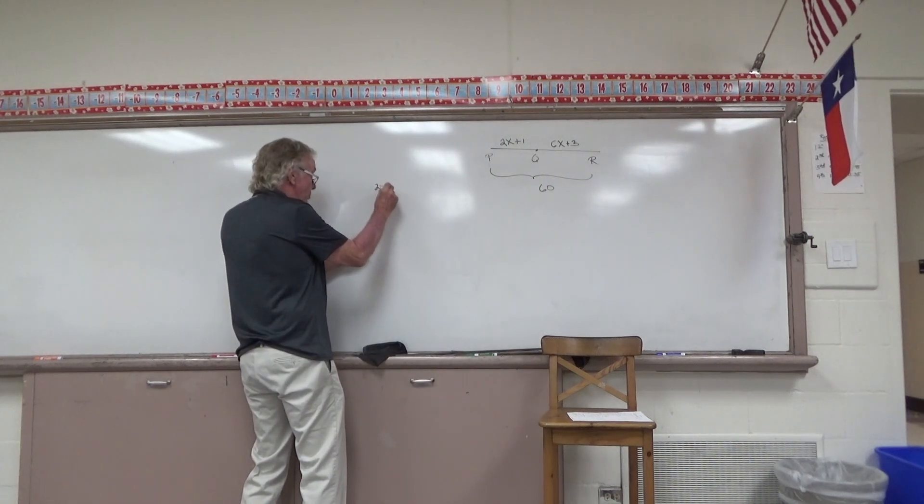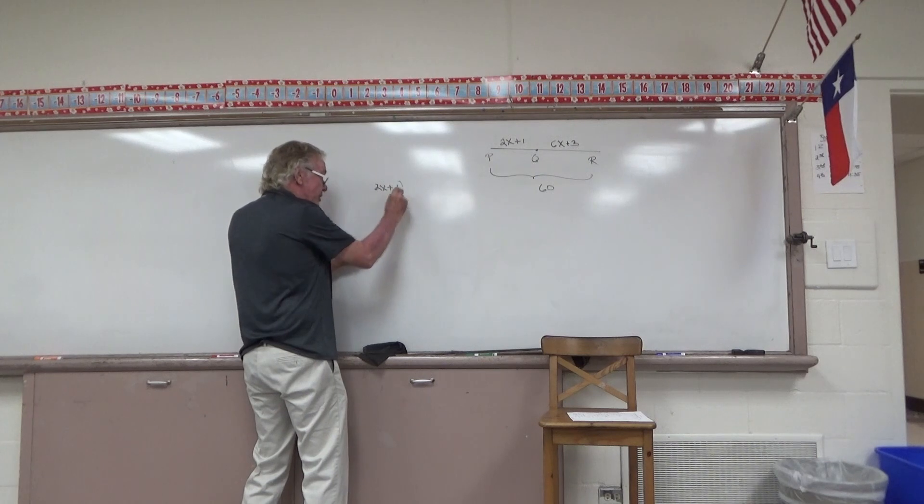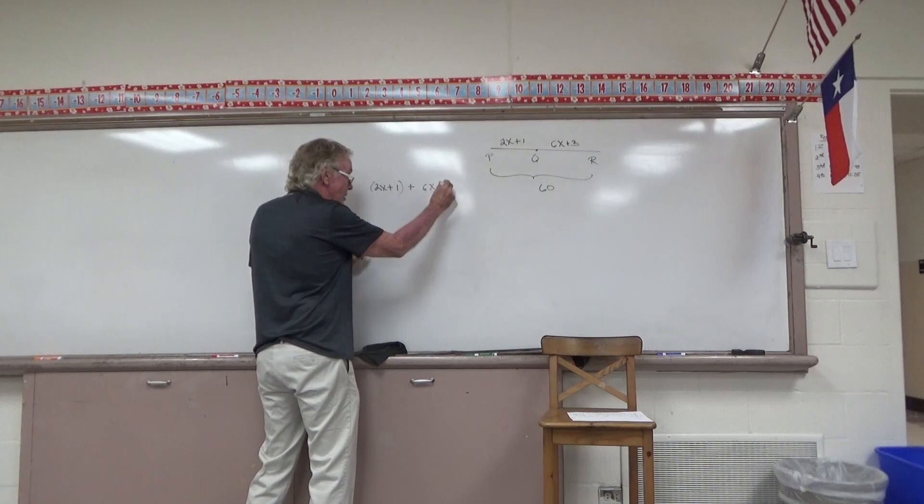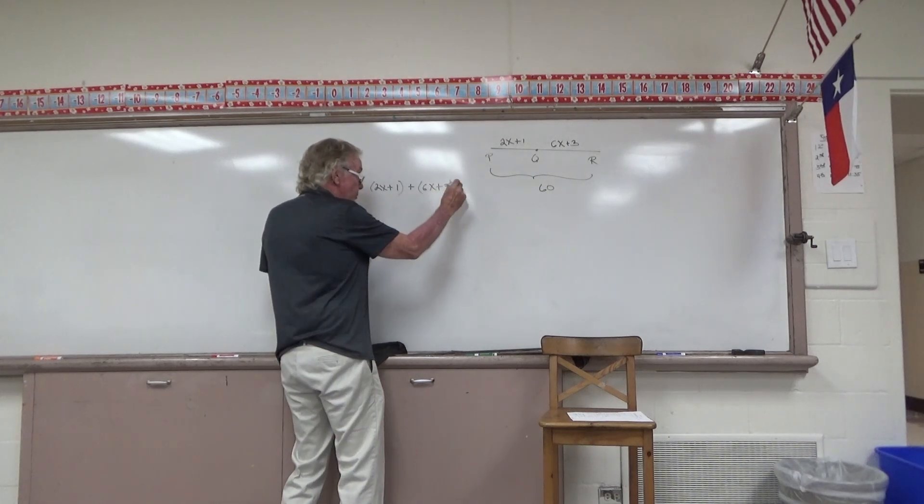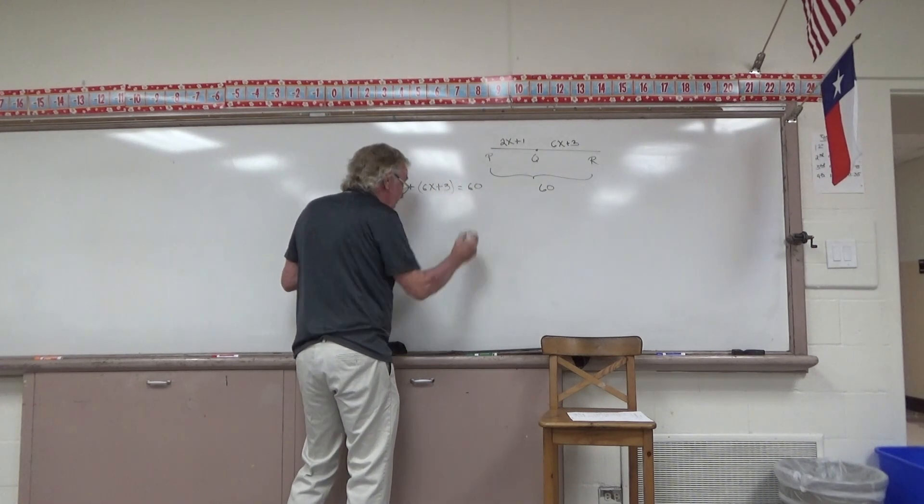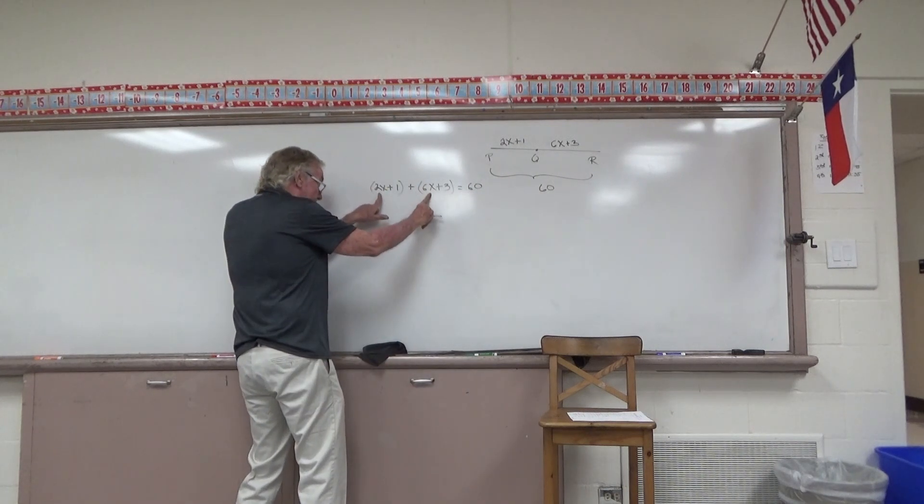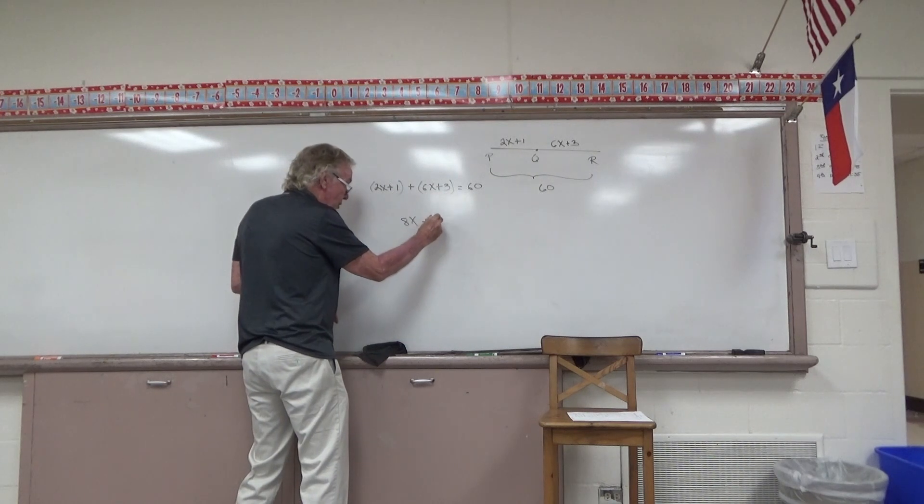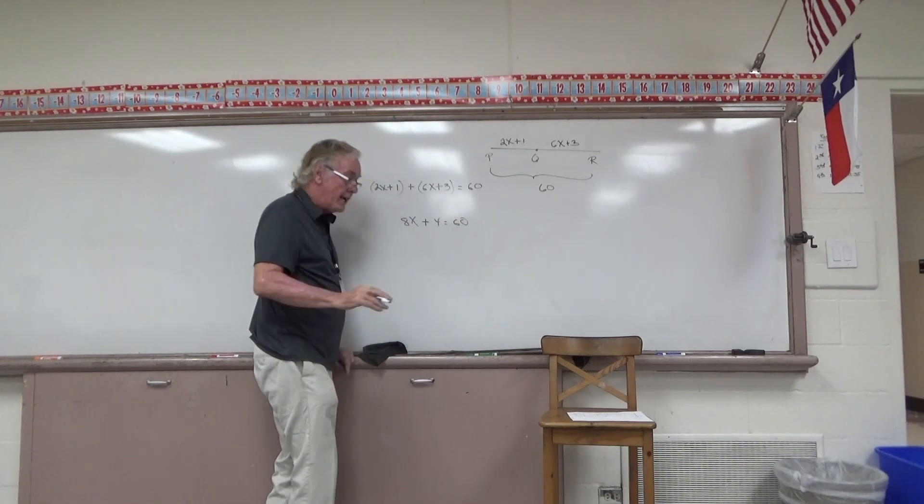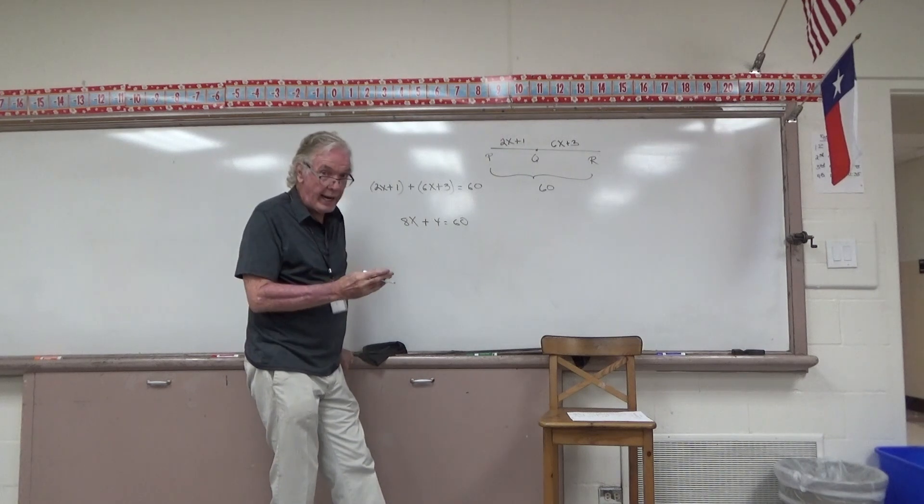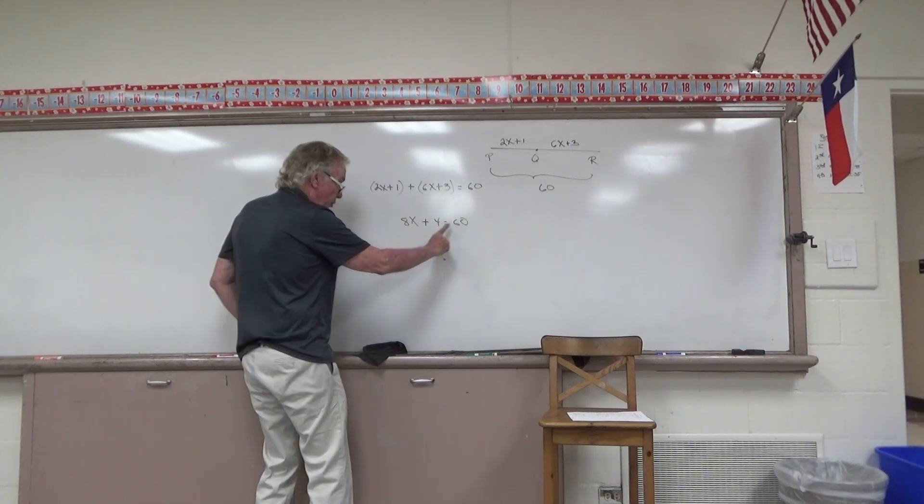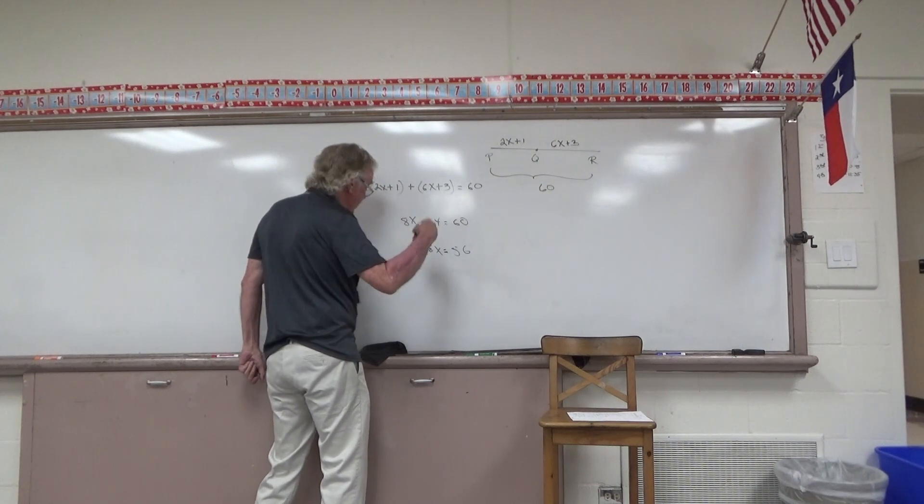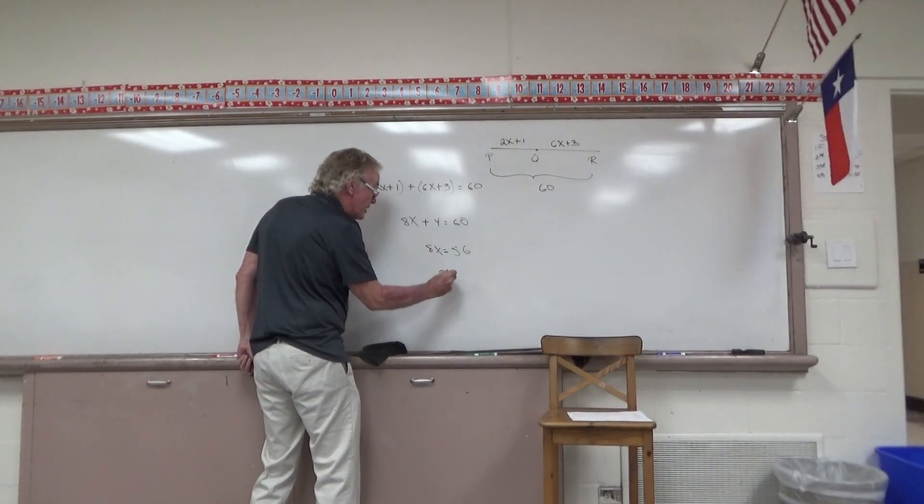2X plus 1, you don't need parentheses around this but it might be helpful, plus 6X plus 3, the length of QR, is equal to the full length of 60. Let's gather like terms. 8X and the 1 and 3 give me plus 4 equals 60. As we isolate the variable, subtract 4 from both sides, leaving 8X equal to 56. Dividing both sides by 8, I'm convinced that X is equal to 7.